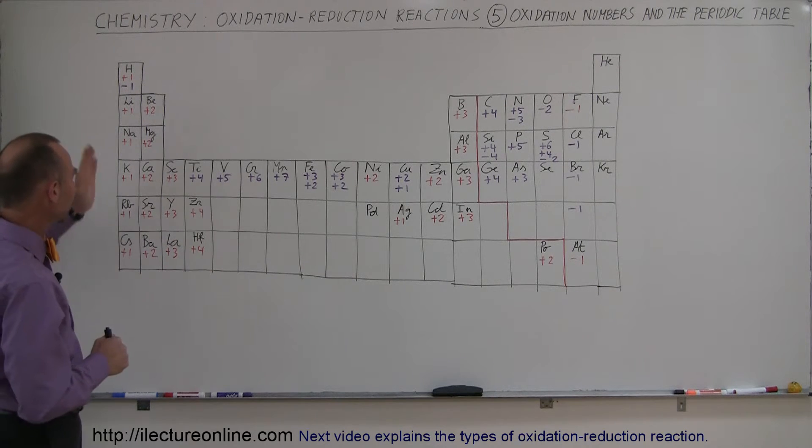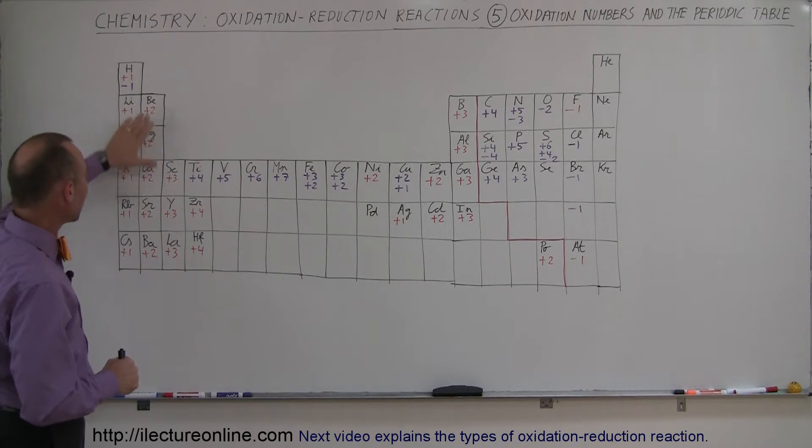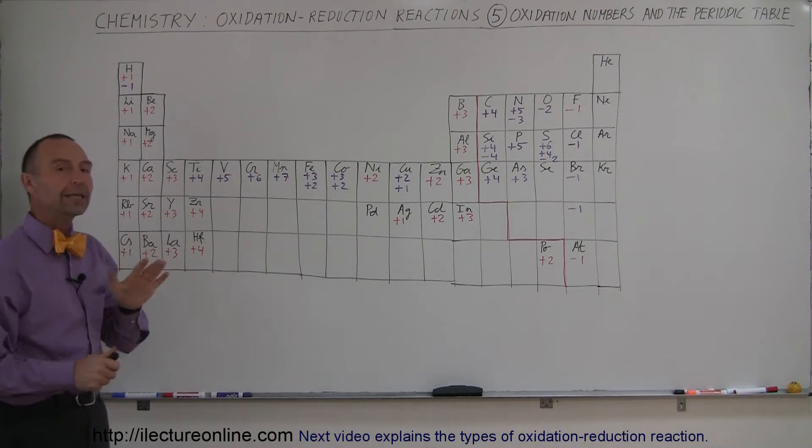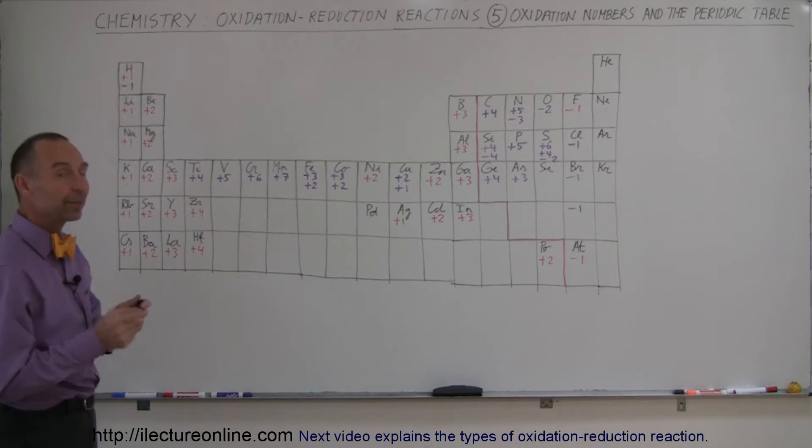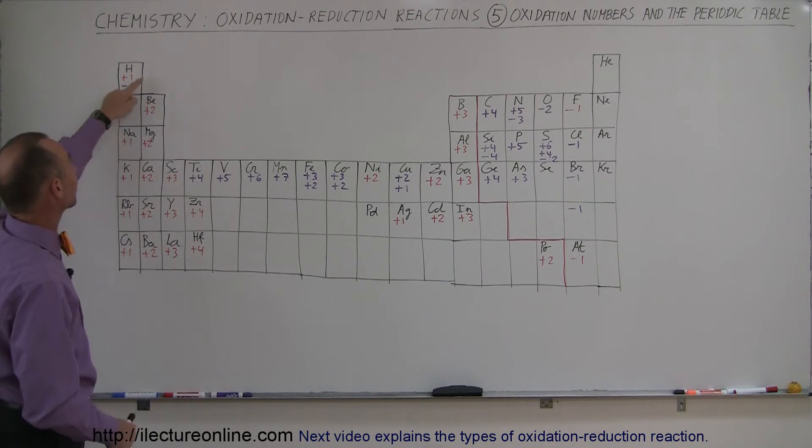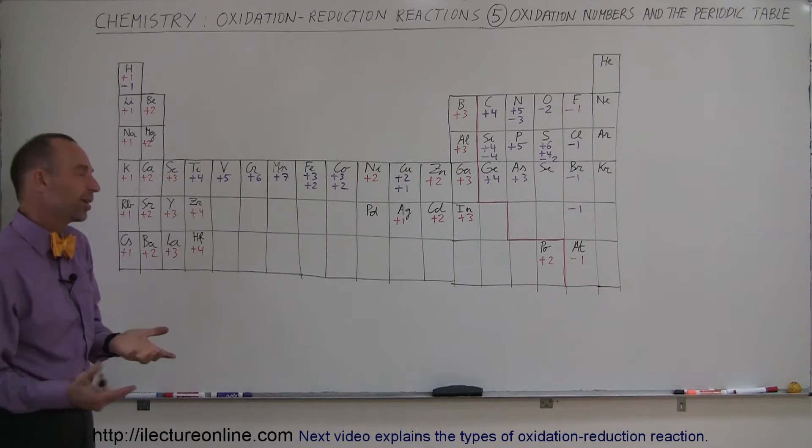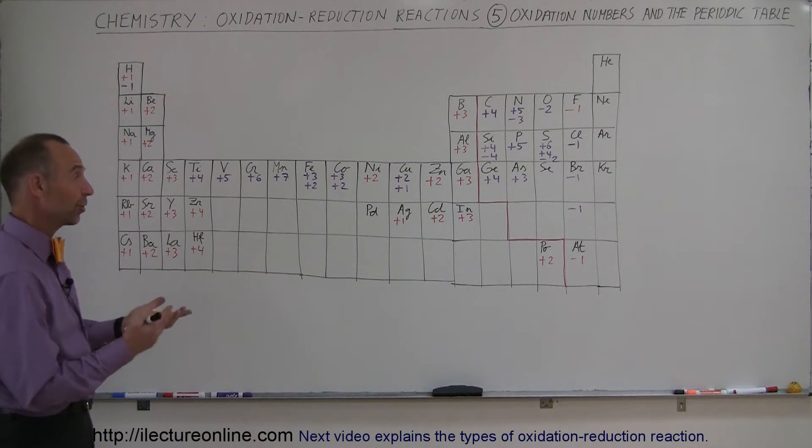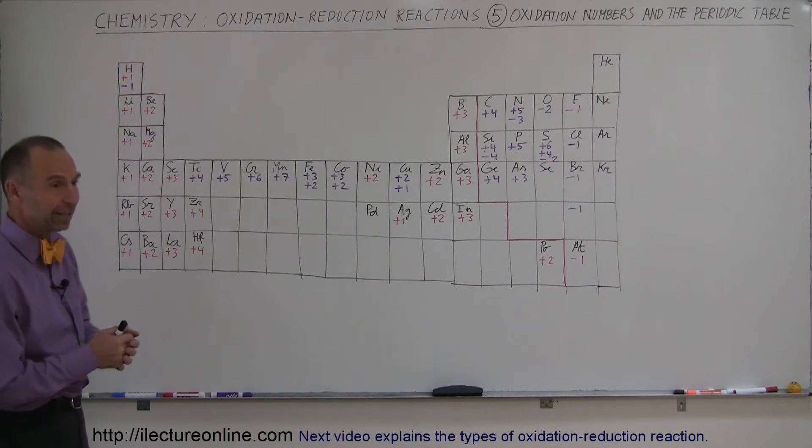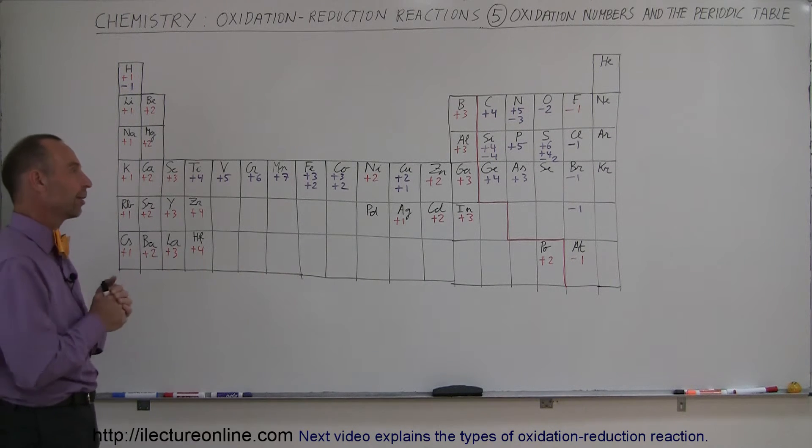So first of all, let's take a look at here. Whenever I have a red number, that indicates that is the only oxidation number that that element can have. The only exception I have here is hydrogen, where I put both the most common one, plus one, and the less common one, minus one, because there's only two options there. There's only one electron available. Either it can give away the electron or it can get another electron back.